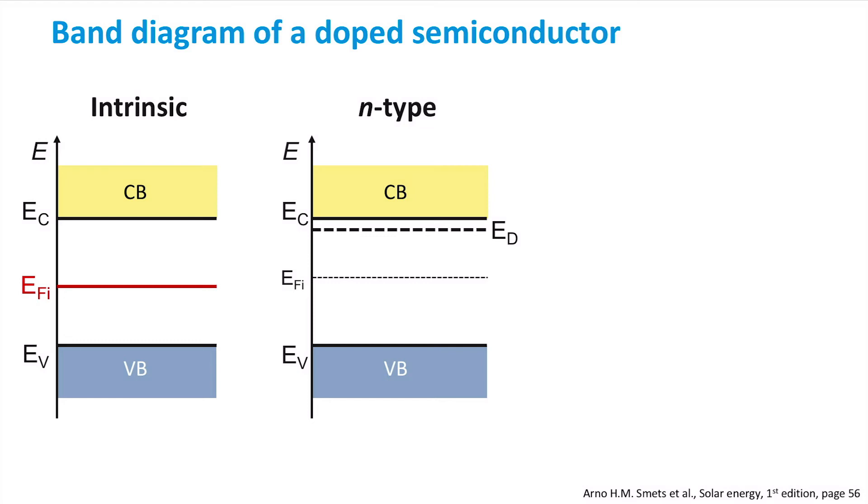This will result in a shift of the Fermi level towards the conduction band. I have drawn the intrinsic Fermi level for reference, but the real Fermi level EF is drawn here in red. You can see that it is between the intrinsic Fermi level and the conduction band. And the more we dope the material, the closer the Fermi level will be to the conduction band.